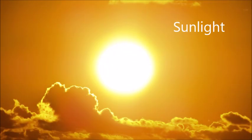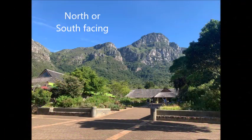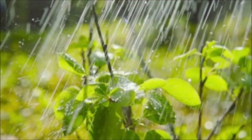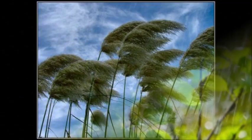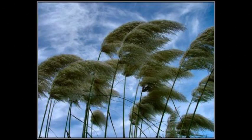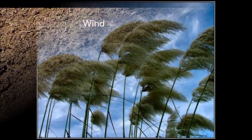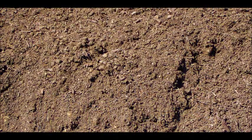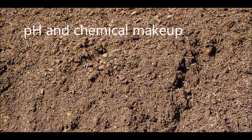Sunlight affects the rate of photosynthesis. Whether the plant is on a north or south facing slope will affect how much sunlight it is exposed to. Rain affects the amount of water the plants can absorb, therefore affecting rates of photosynthesis. Wind causes greater transpiration rates so the plant loses more water, affecting photosynthesis. The chemical nature of soil affects nutrients the plants can take in and so will affect the growth and health.